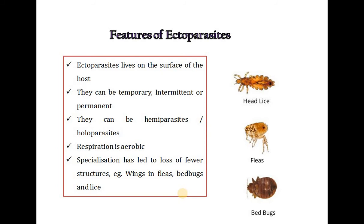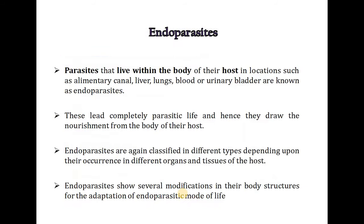Ectoparasites live on the surface of the host and can be temporary, intermittent, or permanent. They can be hemiparasites or holoparasites — that is, they may lead a complete parasitic life or only a temporary one. Respiration is aerobic in ectoparasites. Specialization has led to loss of some structures, like wings in fleas, bed bugs, and lice. Examples include head lice, fleas, and bed bugs.